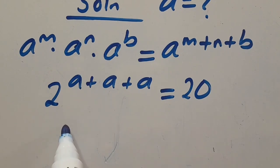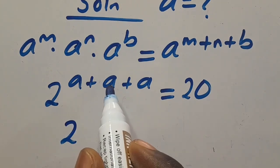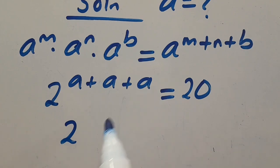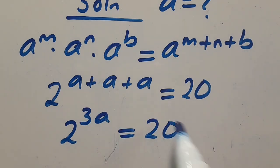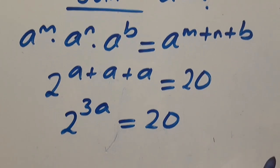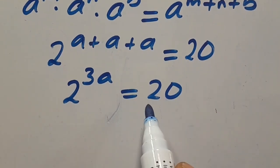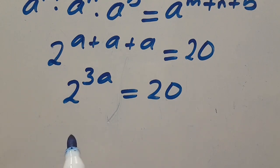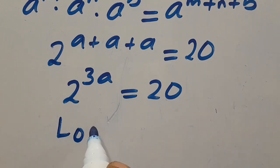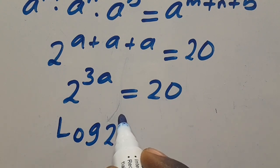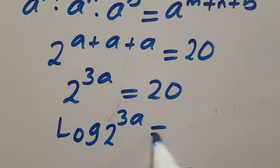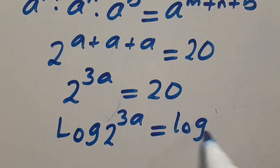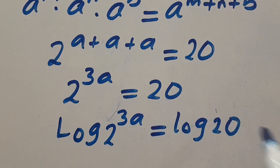So we have 2 to the power of A plus A plus A, which gives us 3A, and everything equals 20. So from here let us introduce log to both sides, so we have log of 2 to the power of 3A equals log 20.